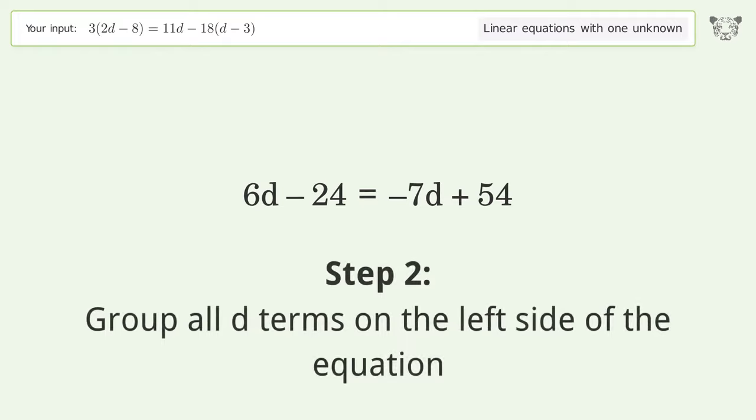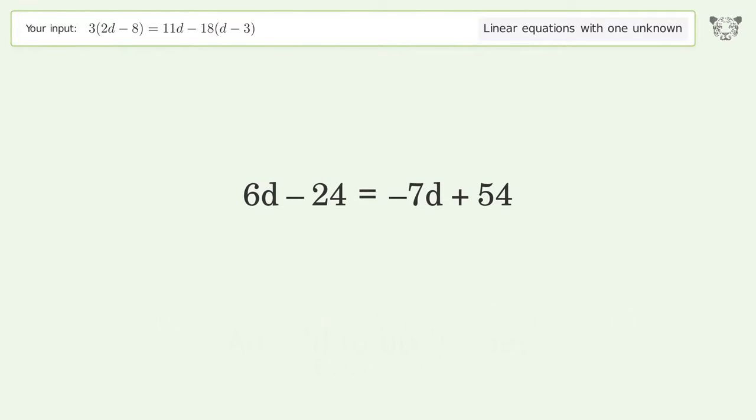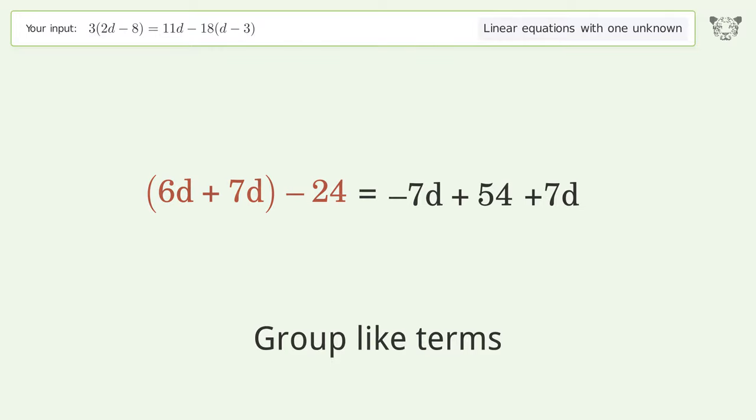Group all d terms on the left side of the equation. Add 7d to both sides. Group like terms. Simplify the arithmetic.